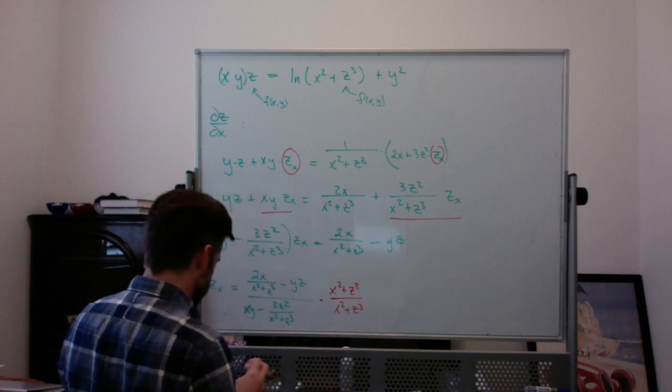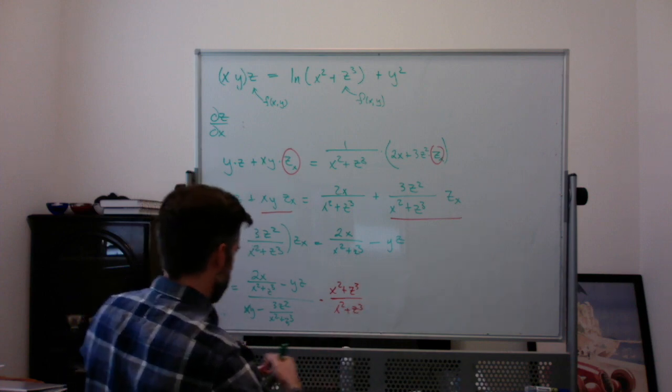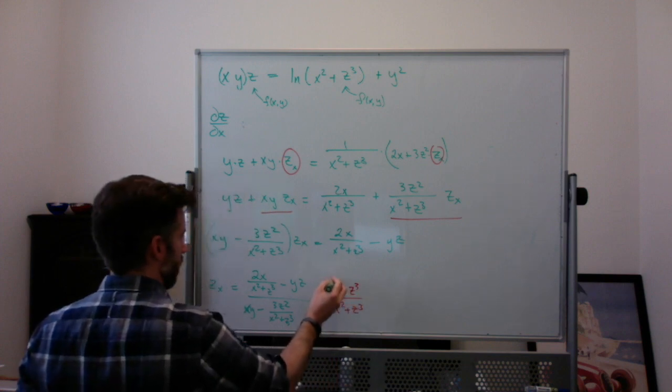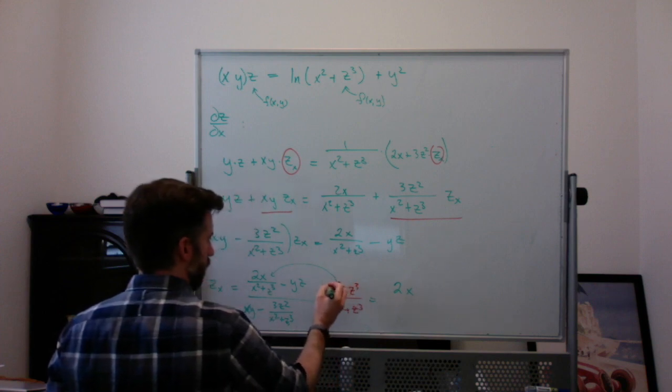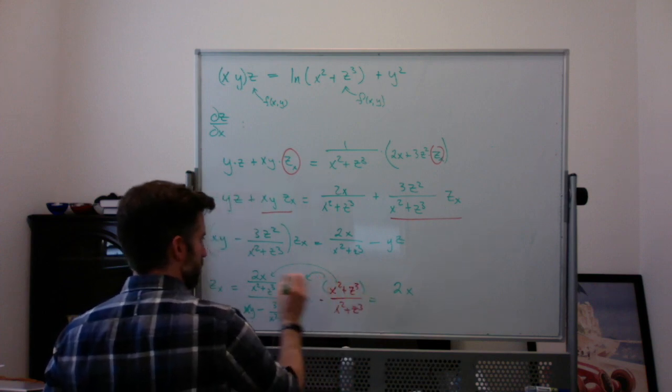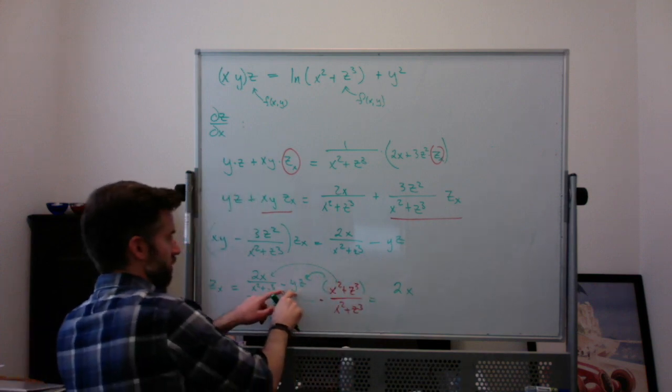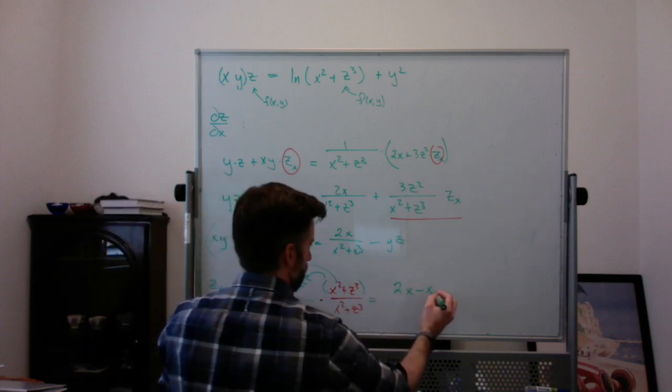So when I do that and distribute it, this times that is going to cancel out and you're going to get 2x. All of this times this is what we're going to distribute. It's going to be minus yz times x² is minus x²yz.